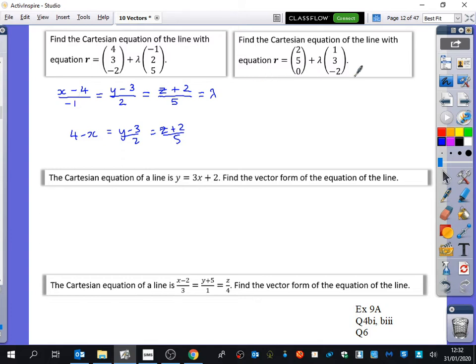So what's the Cartesian? Who thinks they can tell me the Cartesian of this one? x minus 2 over 1. We still write over 1. It's stupid, but we do. y minus 2 over 3. Z over minus 2. And z over minus 2. We probably do not do the 0 there. And again, that's equal to lambda, but we don't have to write that one that we've got here.